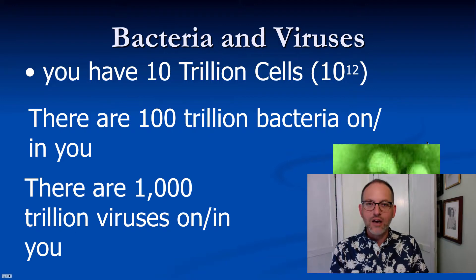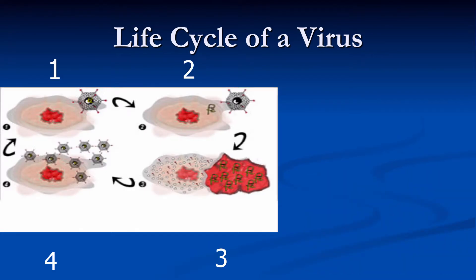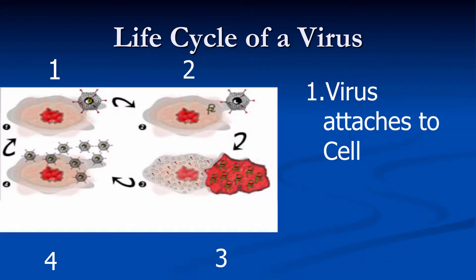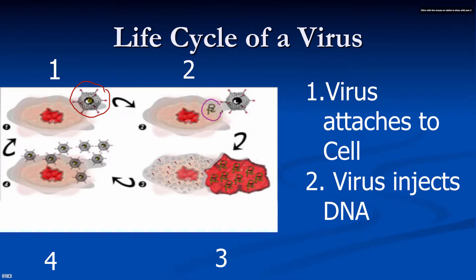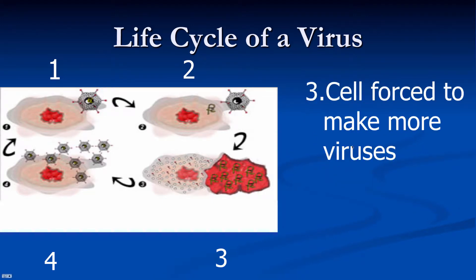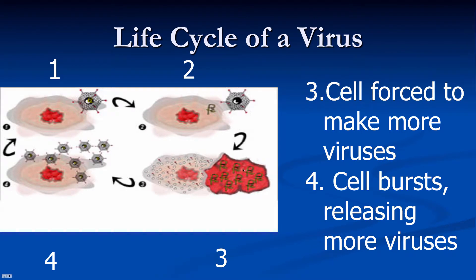Let's look at what viruses do and how they attack us. First, a virus attaches to a cell — here's a virus sticking to the outside of a cell. Next, the virus injects DNA, which is the instruction booklet for all living things, giving the cell new instructions. The cell is then forced to make more viruses, and finally the cell blows up releasing more viruses — killing your cells while making more viruses at the same time.